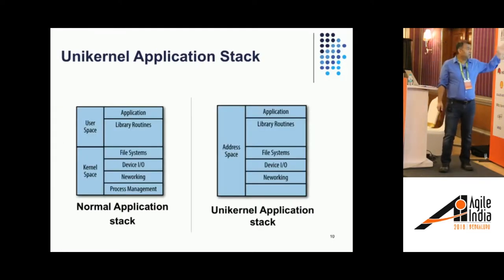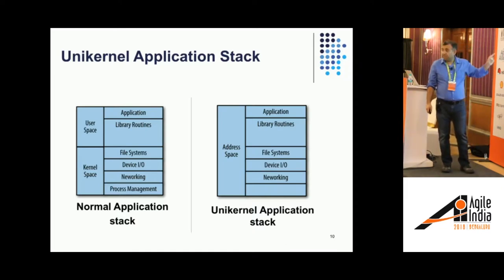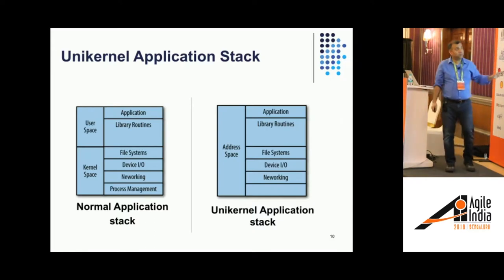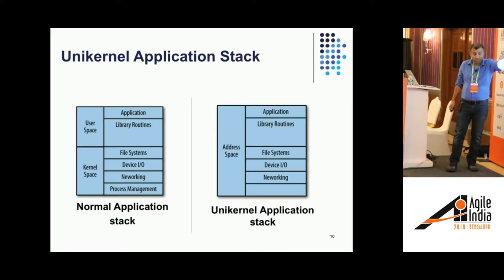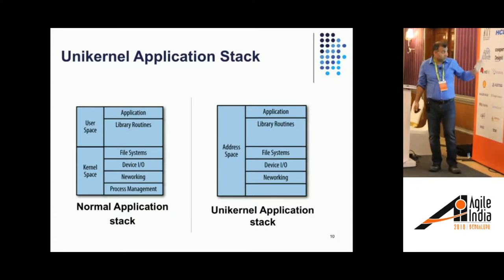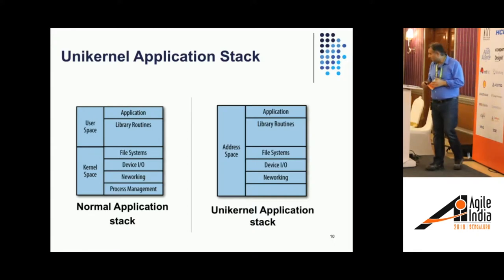In the traditional application stack, you have a kernel space and a user space. Your OS — process management, networking — uses the kernel space, and your application libraries use the user space. One performance problem is that you have to switch between kernel space and user space rapidly when running. What unikernel does is fuse them together. And because networking in a unikernel is not exactly the same — you may not use all components — that component only has what your application actually needs. There is no process management because you don't have processes in a unikernel. And if you don't use a file system, you won't have one.